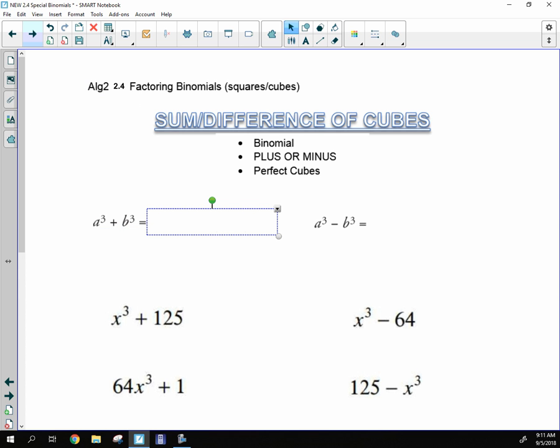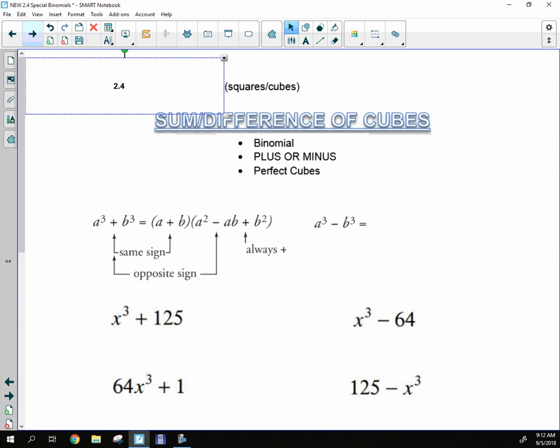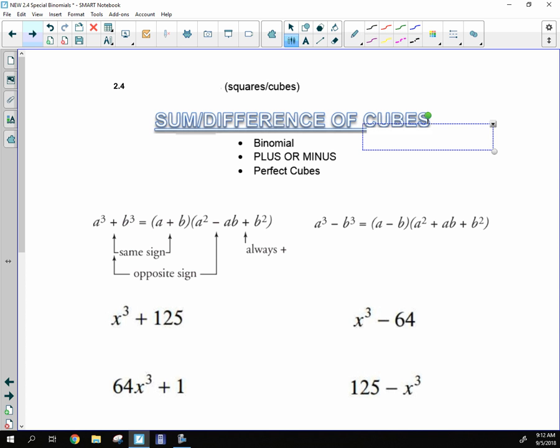But basically it breaks down into this. If you notice that you have perfect cubes in both terms, you're going to end up with a pattern that does this. Now really what you're going to do is you're just going to come up with a first one. The first one is how you come up with the second one. And then there is a pattern with the signs. When you look at your signs, you're going to notice the first set of parentheses has the same signs as the original problem. The second sign in the second set of parentheses is going to be opposite of the first sign. And then the last one is always going to be a plus.